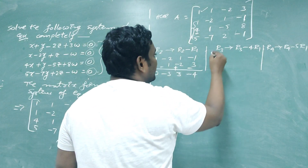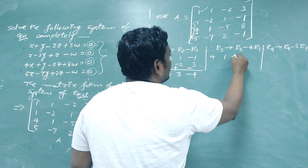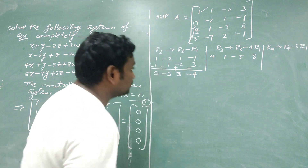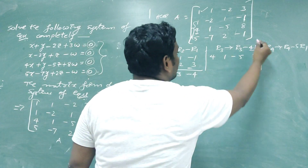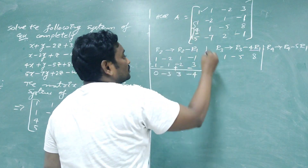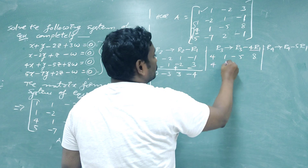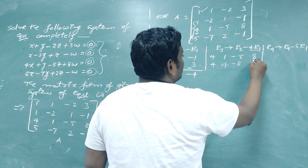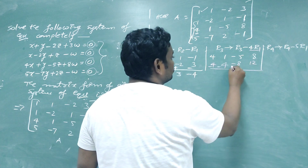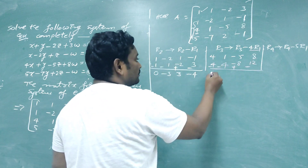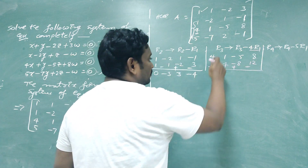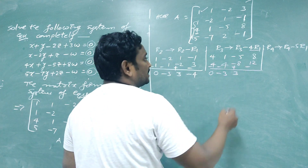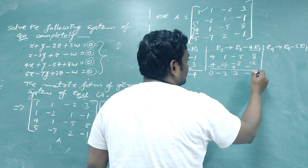For new R3, write R3 as 4, 1, -5, 8, then compute 4×R1 = 4, 4, -8, 12, and subtract. So: 4-4=0, 1-4=-3, -5+8=3, 8-12=-4. The new R3 becomes 0, -3, 3, -4.